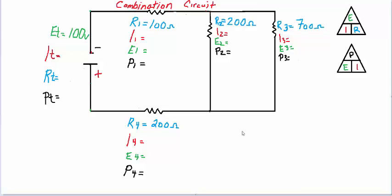Okay, combination circuit number two. Four resistors. Resistor 1, 100 ohms. Resistor 2, 200 ohms. Resistor 3, 700 ohms. Resistor 4, 200 ohms.